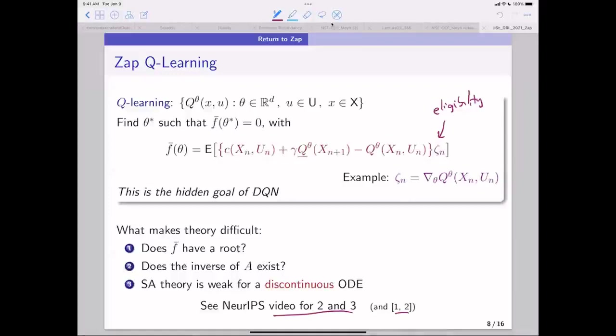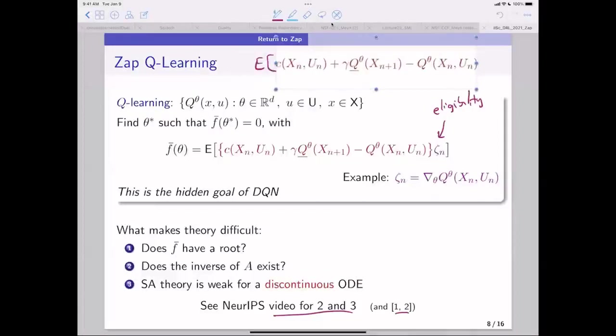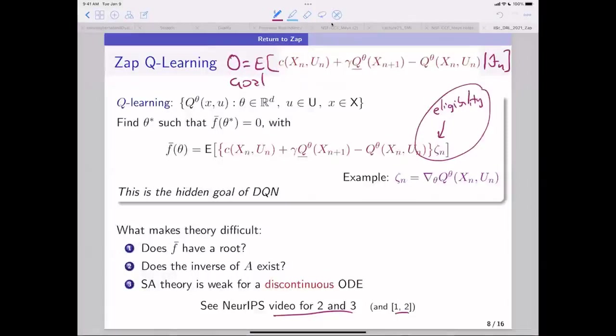I mean, what we want is the actual goal is we want the conditional expectation of this to be zero. You want the conditional expectation of this whole monster given the history to be zero. That's the goal. And so this is a relaxation of that goal. That's the goal, which is not achievable. I say that because, you know, this is like an infinite dimensional constraint, but I only have D unknowns. So it's not achievable. So this is a relaxation.